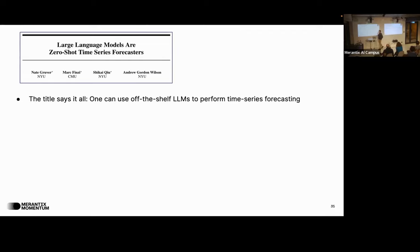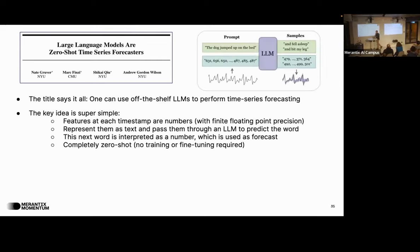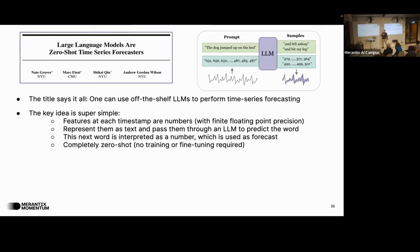The main paper of this presentation tries to connect large language models with time series forecasting. The title says it all: using off-the-shelf pretrained LLMs to do forecasting. The idea is really, really simple: large language models predict the next word, so you can view your time series as numbers — view the numbers as words — encode them as tokens, pass them through an LLM, and get a prediction for the next token. Hopefully that token is a number you can interpret as a floating point value and use as your forecast.